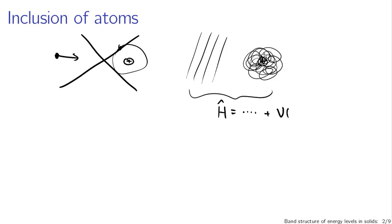Whatever the interaction is, it's going to be encoded by some Hamiltonian H-hat, which includes the kinetic energies of the particles and some potential that tells you how the energy of this interaction takes place — whether there's an attractive or repulsive force. Typically you can assume that the potentials are related just to the relative displacement between the atom and the electron, perhaps only depending on the distance between them.